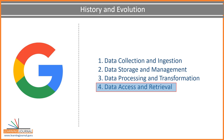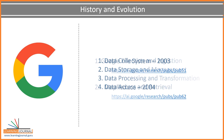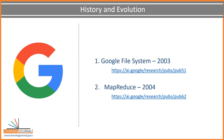In Google's case, the result was the index. They wanted to keep it in a random access database that could support high-speed queries by the Google search engine application. Google successfully solved all the above problems and was generous enough to reveal their solution to the rest of the world in a series of white papers. The first white paper was published by Google in 2003 and talked about solving the data storage and management problem.